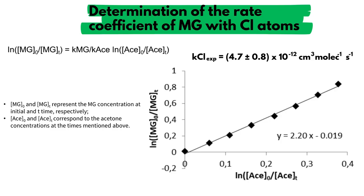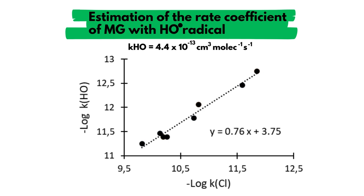The rate coefficient of the reaction between MG and chlorine atoms was determined using a relative method by comparing the temporal variation of the MG concentration with that of a reference compound, acetone. The estimation of the rate coefficient of MG with hydroxyl radicals was obtained from the figure using the rate coefficients of selected compounds. From the slope of the plot, the value was determined.